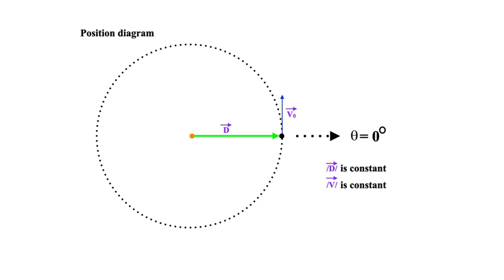I'm showing here the planet at zero degrees angle of azimuth. The magnitude of the displacement vector is constant because we're dealing with a circular orbit, and as we proved earlier, the speed of the planet is also a constant.